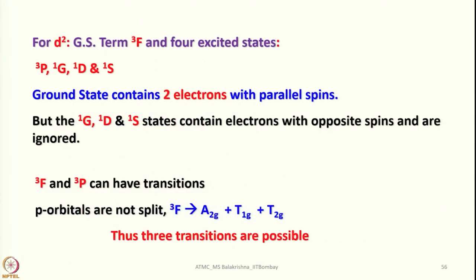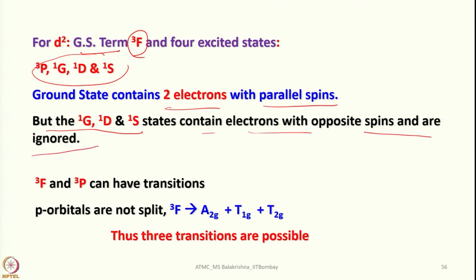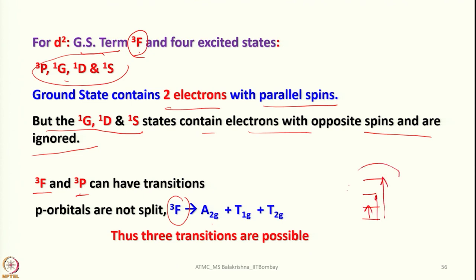For D2, the ground term is ³F and four excited states will be there. The ground state contains two electrons with parallel spins, but some states contain electrons with opposite spins and are ignored. We are left with only two relevant terms that can have transitions. P orbitals are not split, so the F state splits into A2g, T1g, and T2g, giving three possible transitions: transitions 1, 2, and 3.